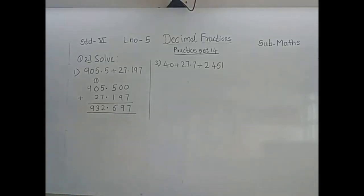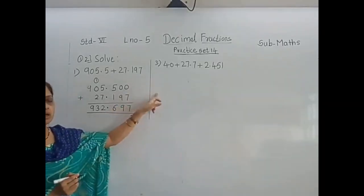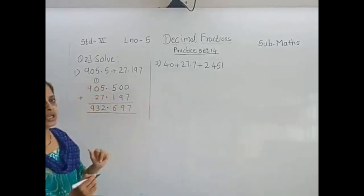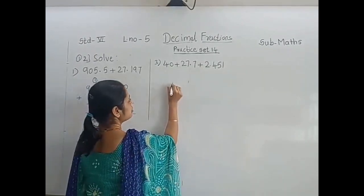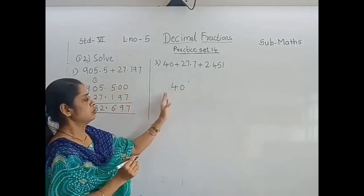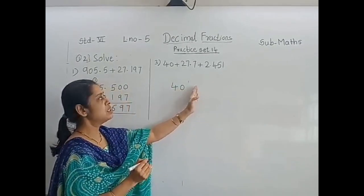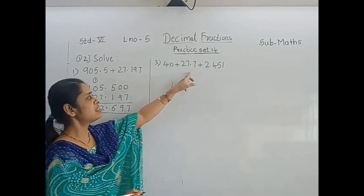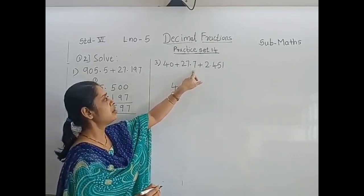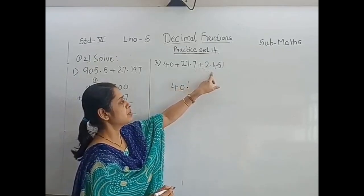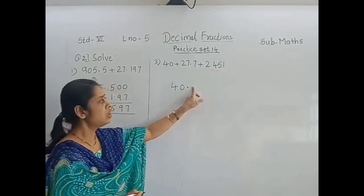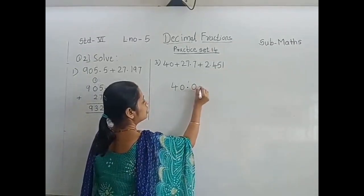The second question you have to solve in your notebook using the same method. Now we will solve the third sum. Here we have to add 3 numbers. Line up the numbers properly according to places. First number is 40. Here they have not given any digits after the decimal point, so put the decimal point here. The maximum decimal places in the third number are 3, so we have to put 3 zeros after the decimal point.